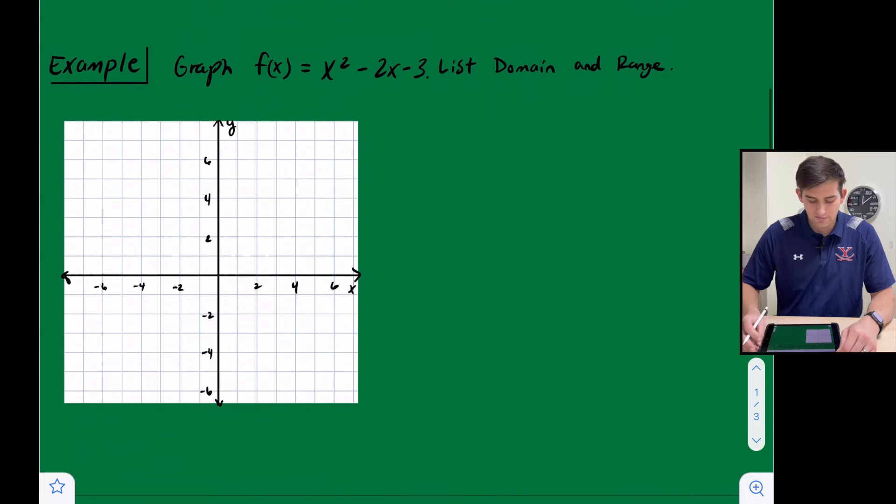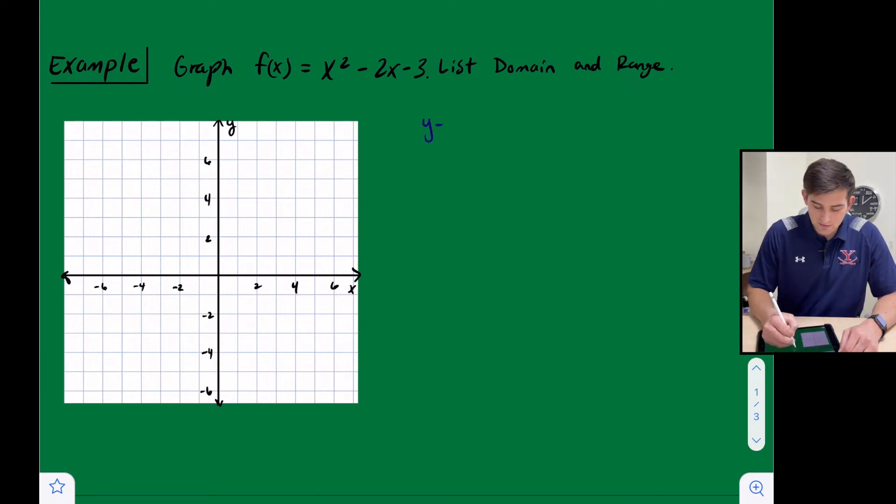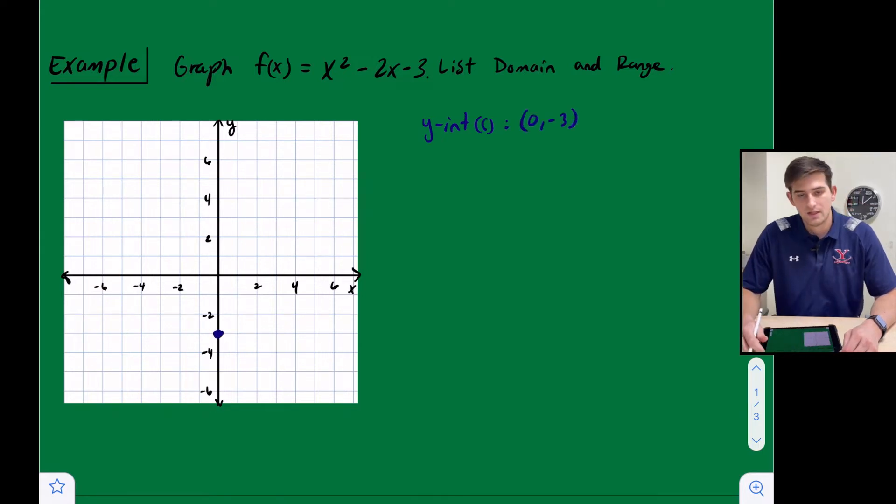The first one says graph f(x) equals x squared minus 2x minus 3. First thing I'm going to do is go ahead and plot the y-intercept. So I know the y-intercept is c. So that's going to be 0 comma negative 3. So we go ahead and plot that right there, 0, negative 3.